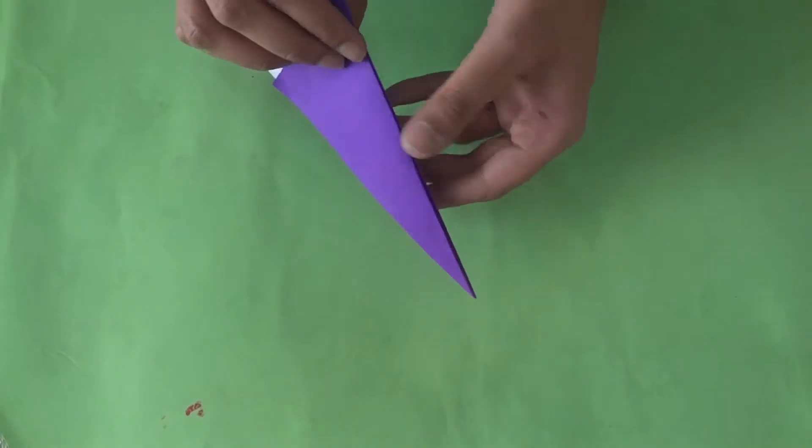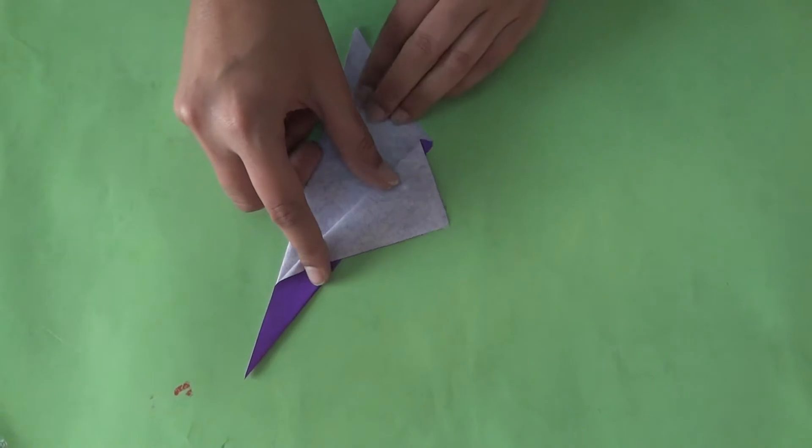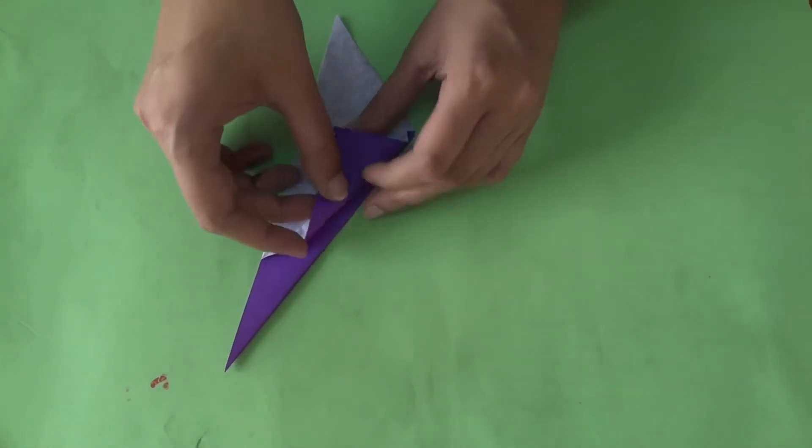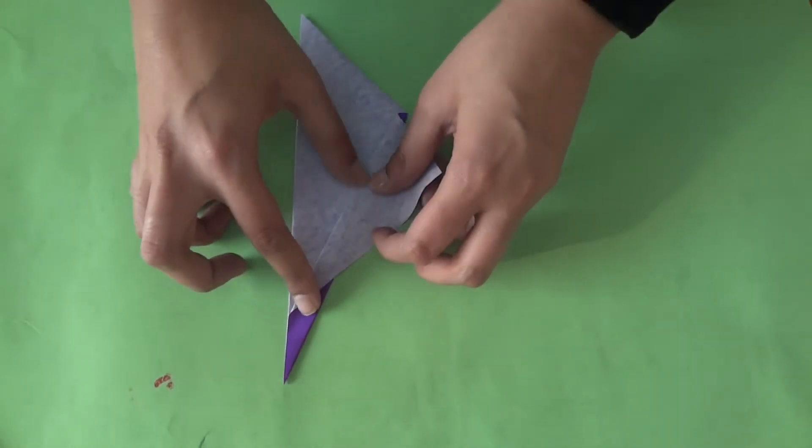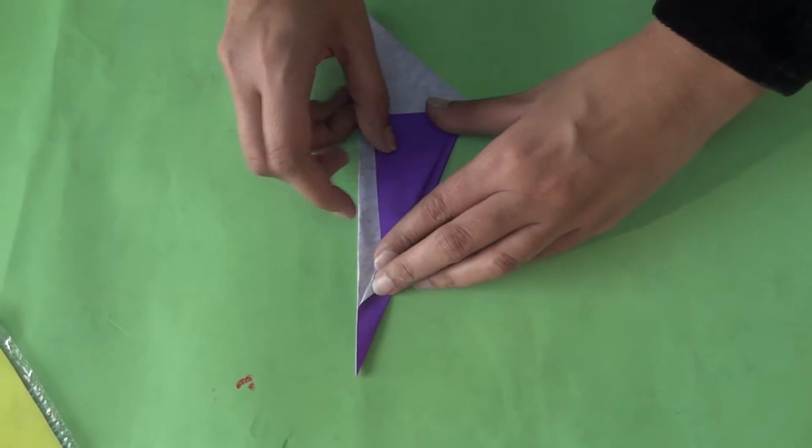To make the coat of the penguin, you pick up this flap and fold it backwards. Then pick it up again and fold it forwards again. In this way.